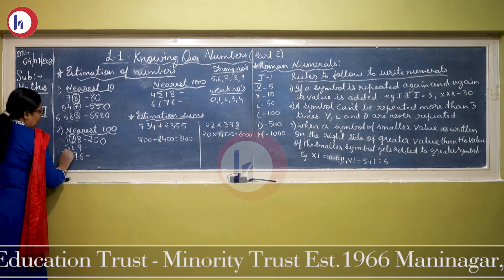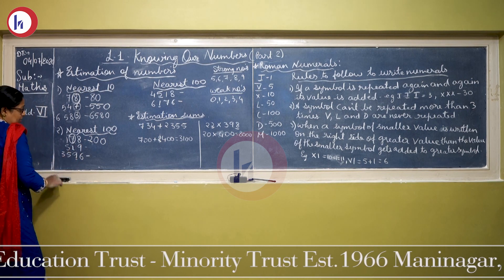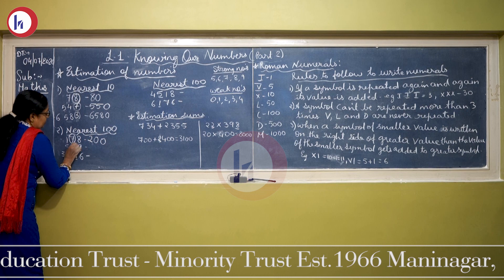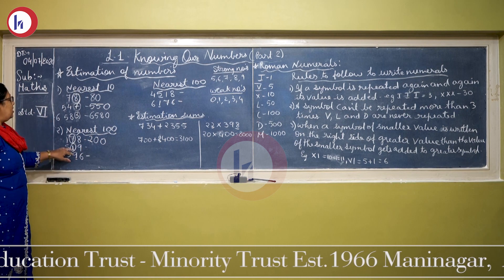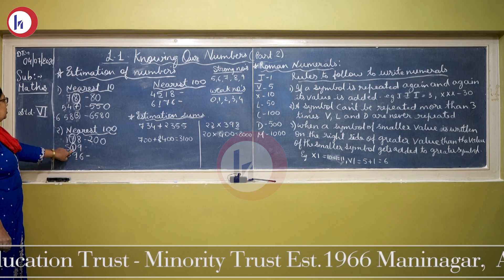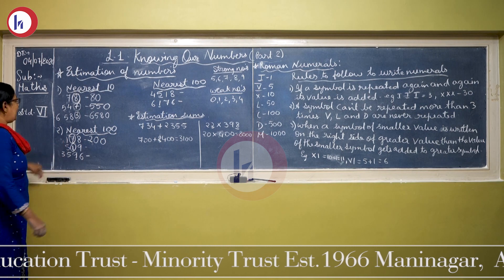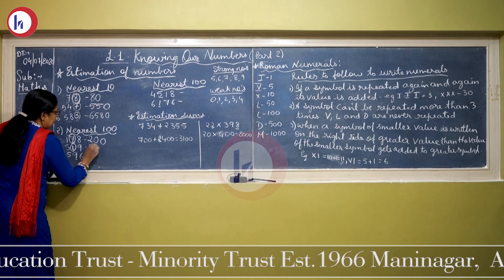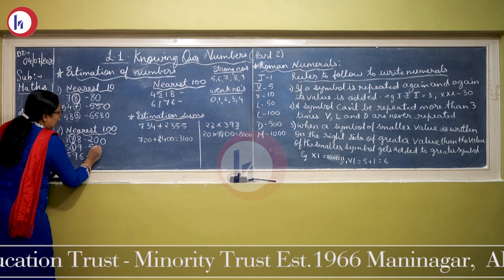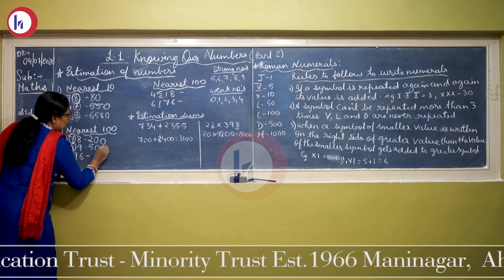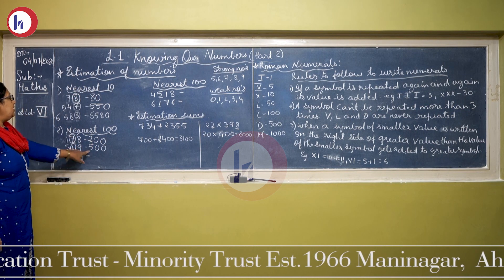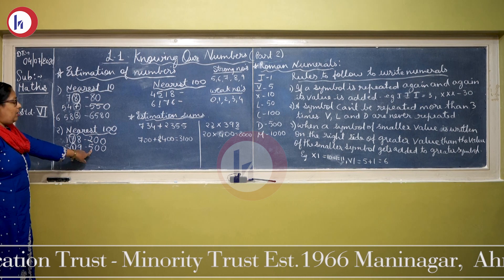Now the second example is 519. The tens place is 1 — 1 is a weak number. So no number will be added. The 5 remains as it is in the hundreds place, and 1 is replaced by 0. So 519 is nearest to 500.